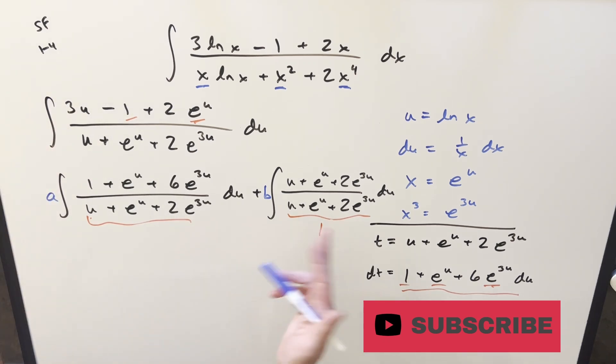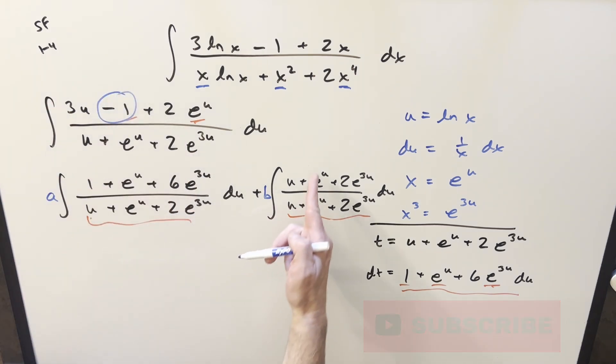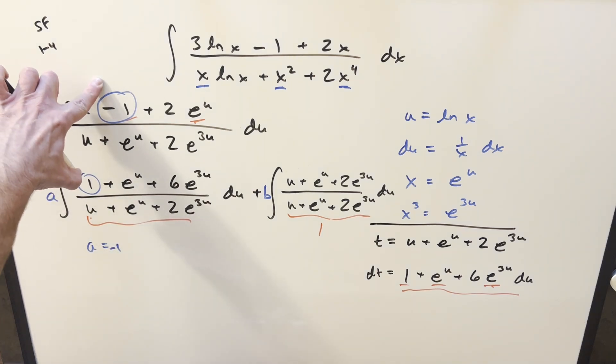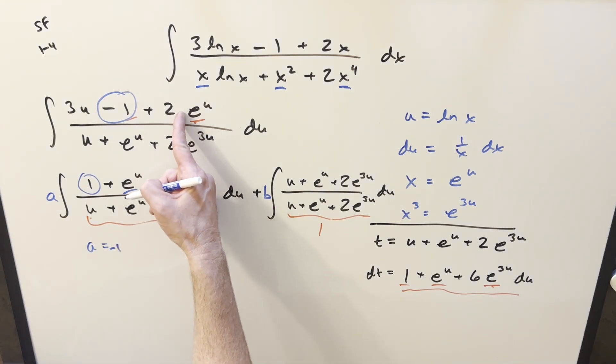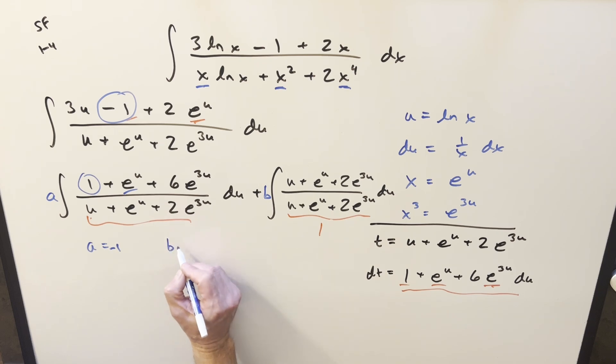Well, we could do this systematically looking at every term, but it's actually pretty easy to just kind of use like one or two terms. Like here, we want to get minus one. There's no constant over here, right? We've got no, everything's got a u in it over here. We have this one. Just notice if a is minus one, then multiplying the a in here, that's going to get us back this minus one here. Then maybe let's look at this e to the u. So if a is minus one, we have minus e to the u. We want to get a two here. Just notice, let's say if b is three,